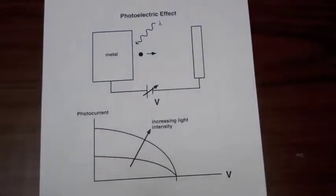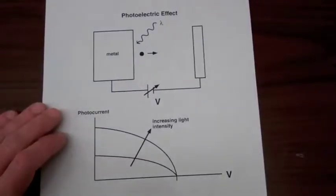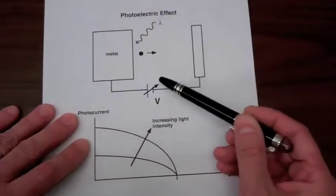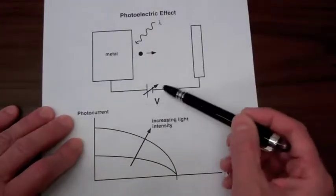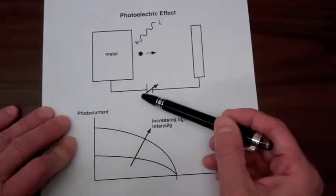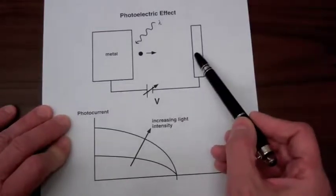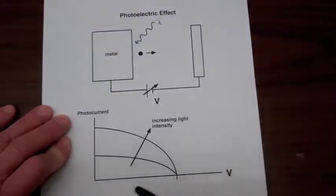Now the electrons are coming off with some range of kinetic energies. So with a variable voltage source here, we can increase the voltage until we have a potential barrier that shuts off the photocurrent. That's illustrated in the diagram down here.